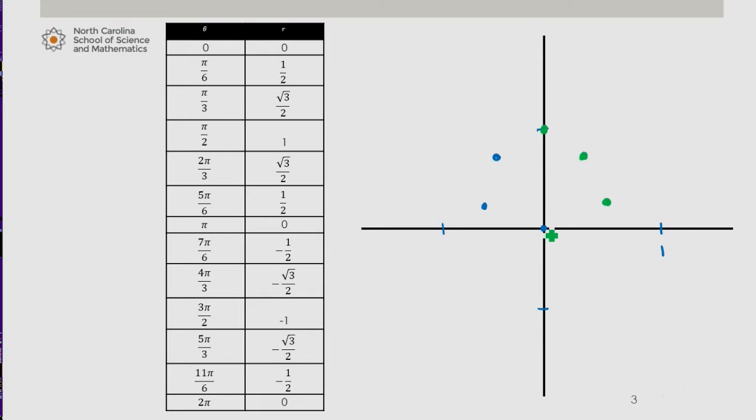5 pi over 3, negative root 3 over 2 is plotted here. 11 pi over 6, negative 1 half is plotted here. And then we're back to 2 pi, 0. So here's my curve.